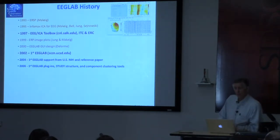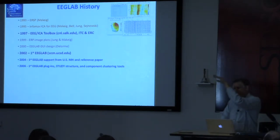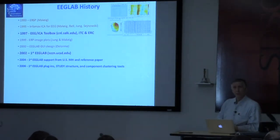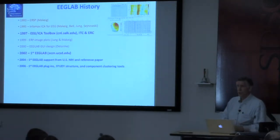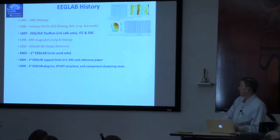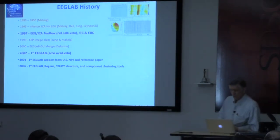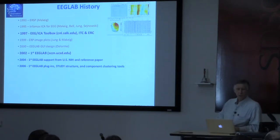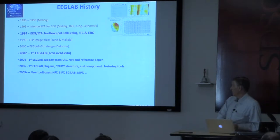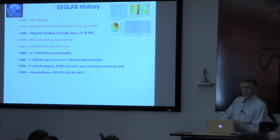We released EEGLAB version one in 2002. From 2004, we've had support from NIH under a program for existing biomedical software. We continued to add a lot. Arno added the idea of plugins—if you write a tiny function, your function can now appear in the EEGLAB menu. There's something like 50 plugins now available through the extension manager.